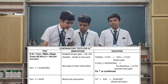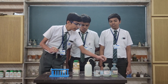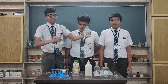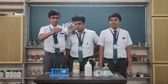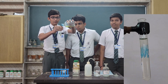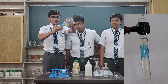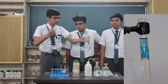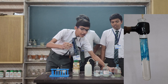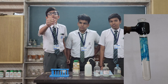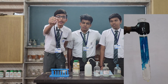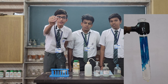Now take Part 1 and add K₄[Fe(CN)₆]. As you can see, Prussian blue is obtained. This confirms that Fe³⁺ is present.